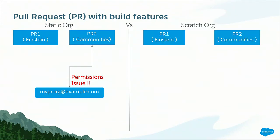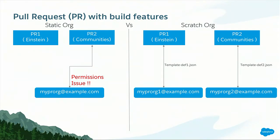Let's implement the same scenario using the Salesforce DX method. I have the same pull requests — Einstein and Communities. The greatest advantage of Salesforce DX is you can create your own template and flavor of orgs based on JSON files. In each JSON file, you can specify any features and permissions you want, then pass that JSON file through the command line to create your own short-lived scratch orgs. You can then deploy Einstein code into the Einstein org and Communities code into the Communities org — all in parallel. Once deployment is complete, you can test your features and destroy the orgs. That's a great benefit of Salesforce DX versus traditional static orgs, where you have to templatize using bulky template files.